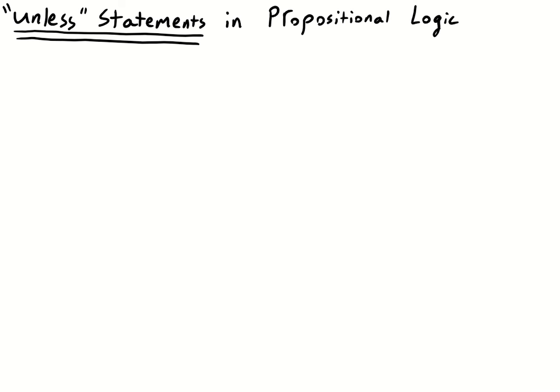Here we have the statement or the proposition P unless Q. The question is, what does this mean and how do we translate it into propositional logic? Consider what it is saying. P is the case unless Q is the case. Or in other words, P is true unless Q is true.